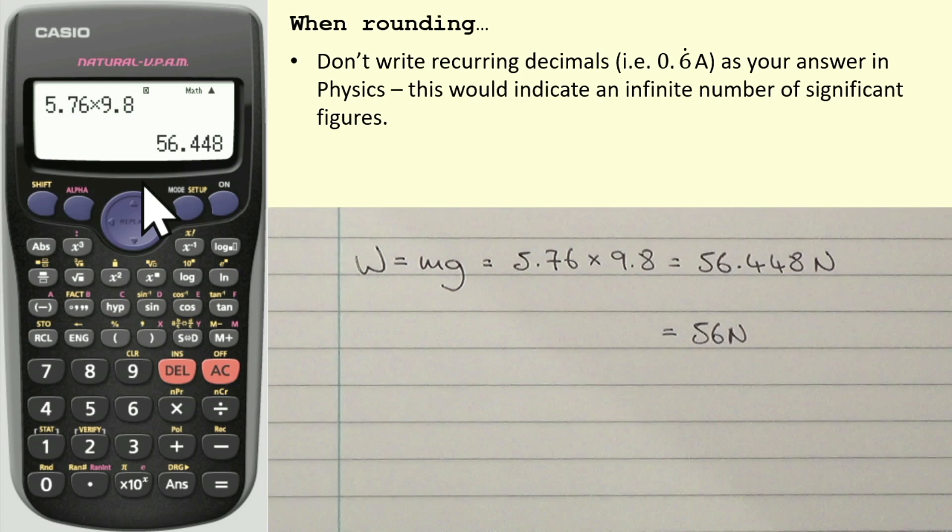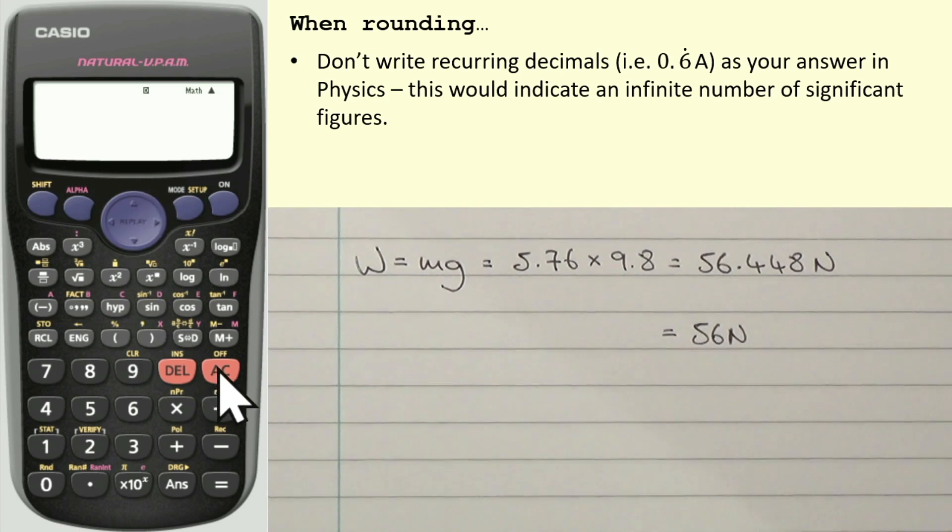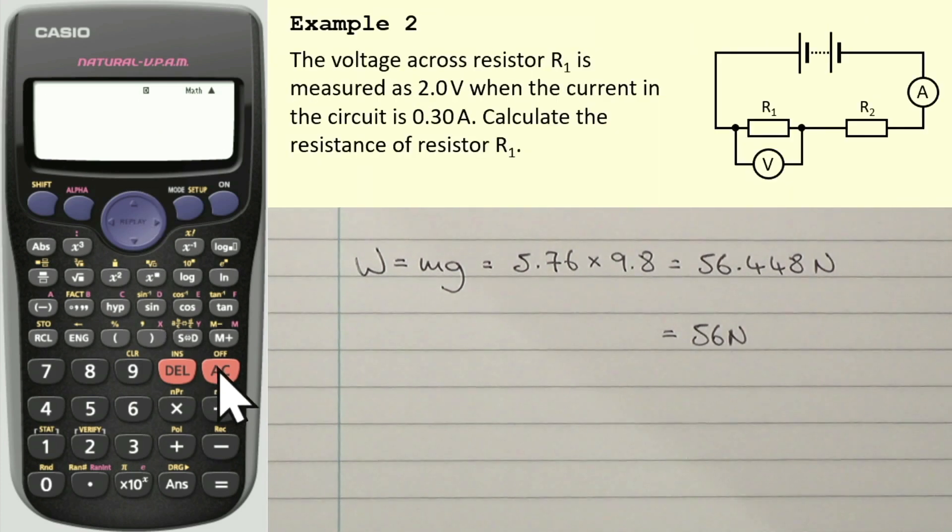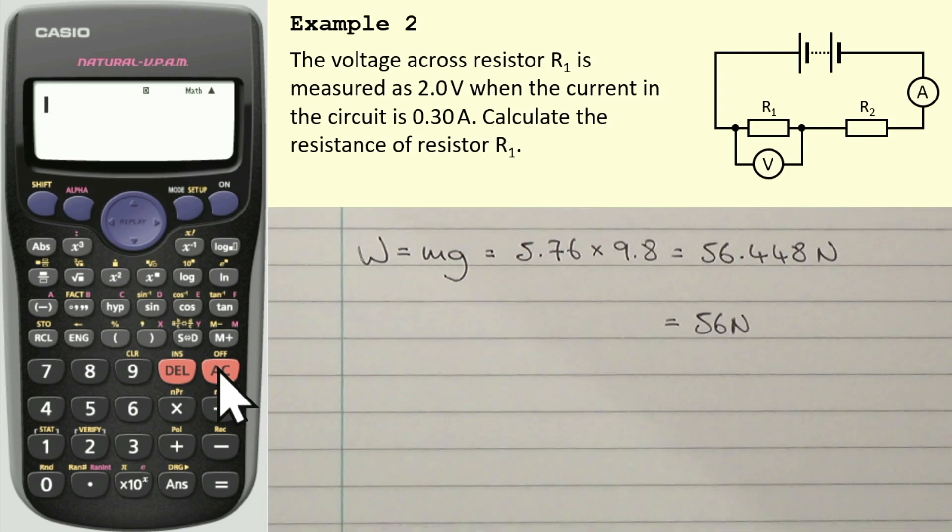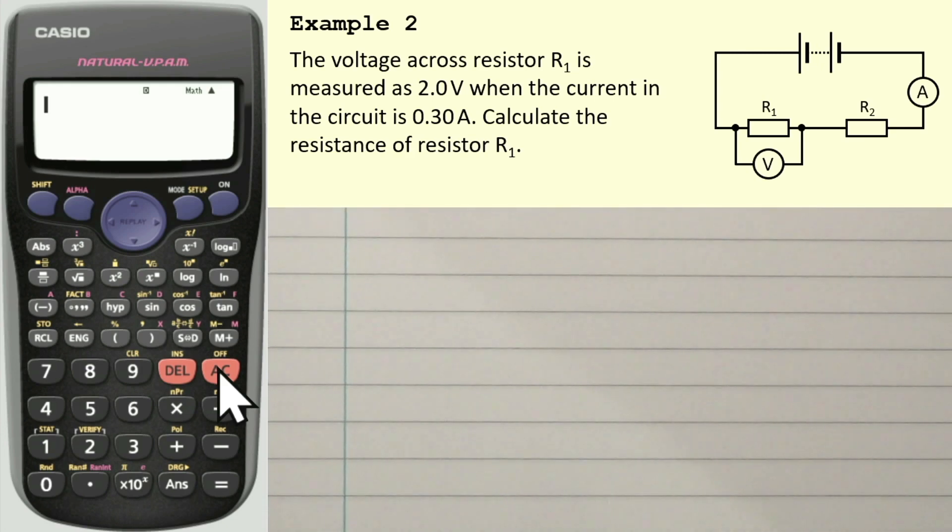What I'm going to do is I'm going to show you another example. So I'm going to press clear on the calculator and show you this second example. And again, don't worry if you don't know the equation. Move that up a second. The second example says the voltage across the resistor R1 is measured as 2.0 volts. When the current in the circuit is 0.30 amps, calculate the resistance of resistor R1.